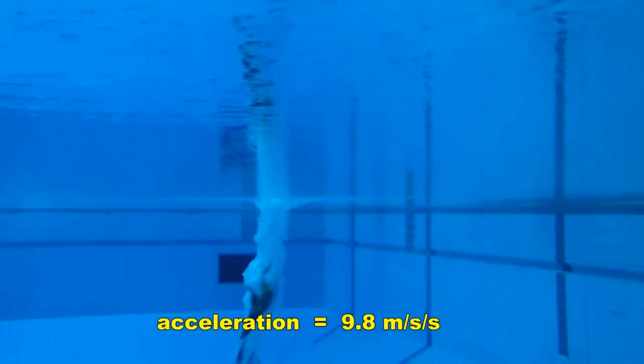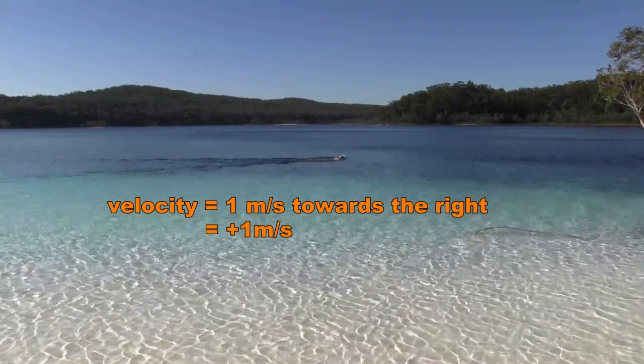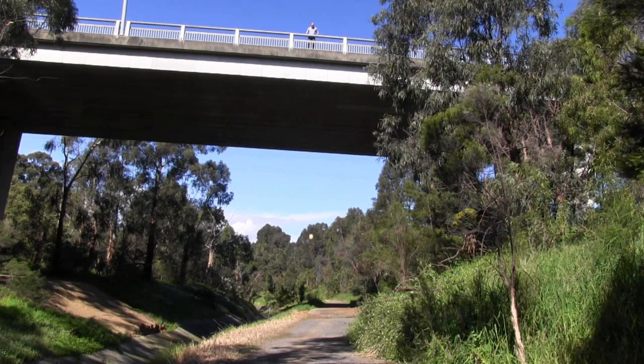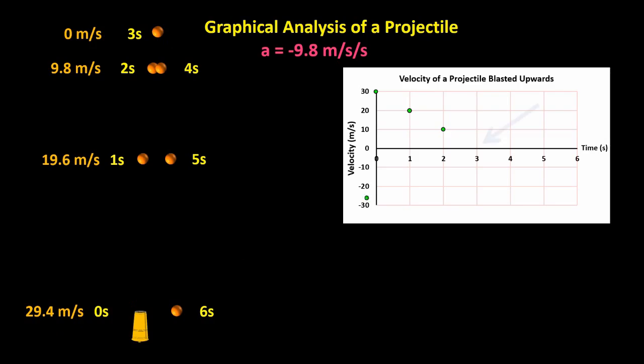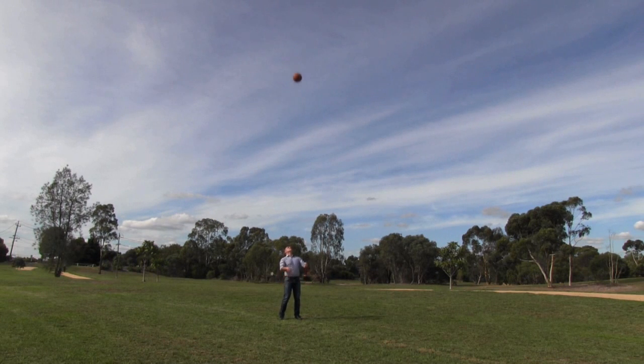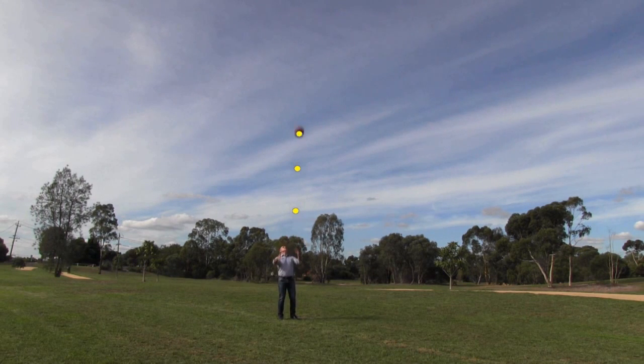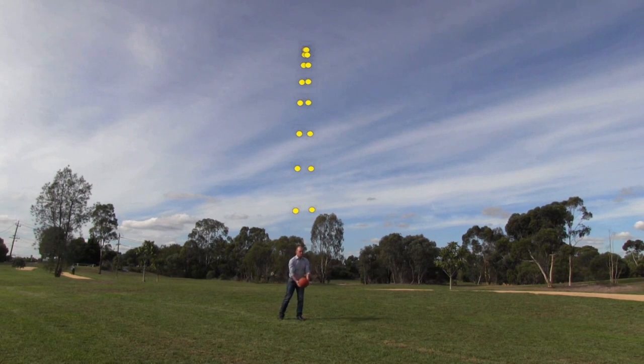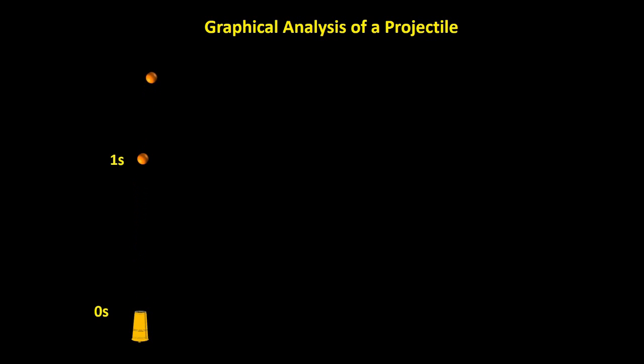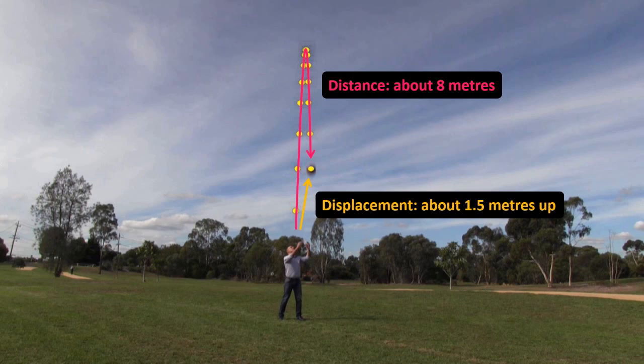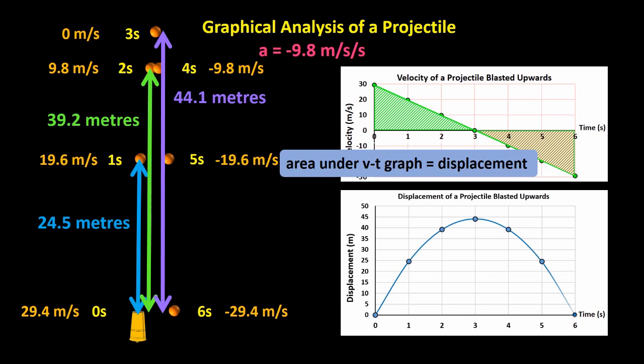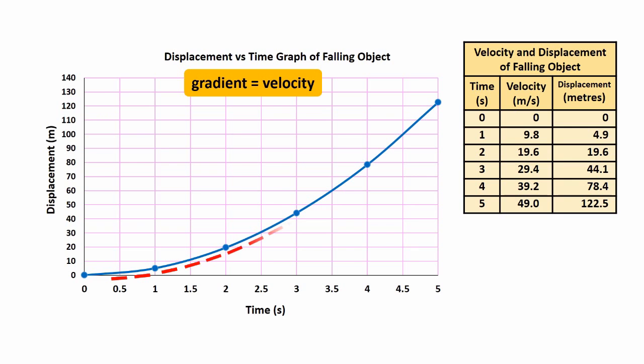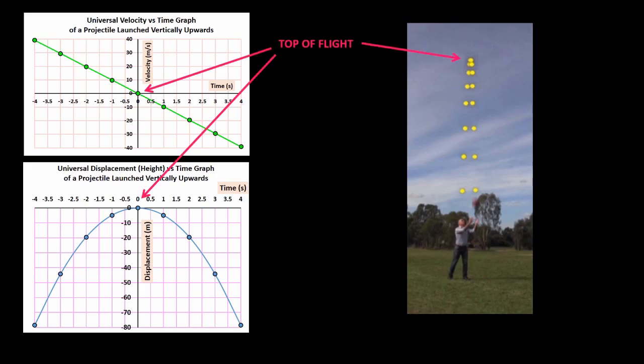Thanks for watching this short excerpt from Shedding Light on Motion Episode 5, Graphing Freefall. In this program, we continue looking at graphs but pay particular attention to how graphs help us to understand the motion of objects that are either falling straight down or which have been launched vertically upwards into the air. The student worksheets and practical activities that accompany the Shedding Light on Motion series can be downloaded for free from our website at www.liacoseducationalmedia.com. Thanks again for watching.